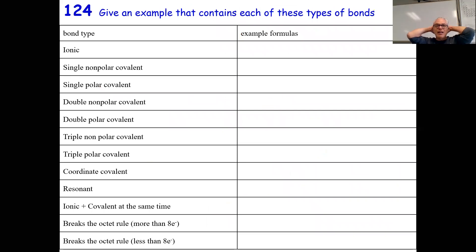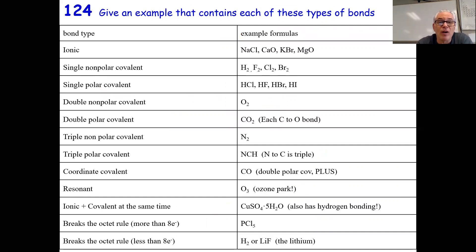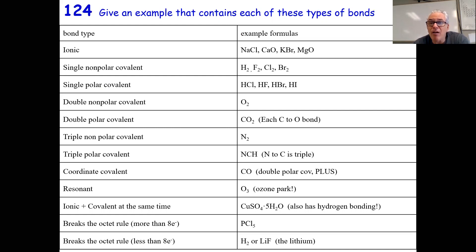Give examples of each type of bond. Ionic bonds: sodium chloride, calcium oxide, potassium bromide, magnesium oxide — a metal and a nonmetal that bond by forming ions. Single nonpolar covalent bonds: two or more nonmetals that bond with the same electronegativity value. Single polar covalent bonds: one pair of electrons shared with different electronegativity values — HCl, HF, HBr, HI. Double nonpolar covalent bond: oxygen, O₂ — sharing two pairs of electrons, both atoms with 3.4 electronegativity, difference of zero.